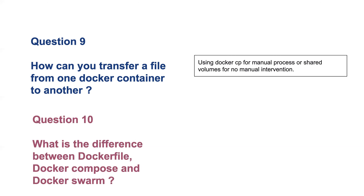Question ten: what is the difference between a Dockerfile, Docker Compose, and Docker Swarm? In simple terms: a Dockerfile creates a single container; Docker Compose can create one or more containers together; Docker Swarm is a container orchestration platform with additional enterprise capabilities like container-to-container communication and advanced support for running containers at scale.